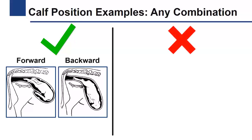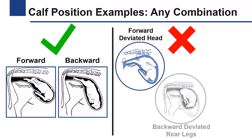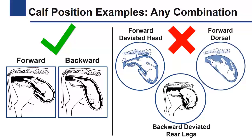The most common calf malpresentations are when the extremities of the calf are deviated, such as the first picture which shows a calf with its head deviated, or the picture below which shows a calf with its rear legs deviated. Sometimes the position of the body of the calf can be abnormal, like in the last picture which shows a calf upside down.